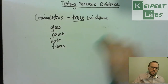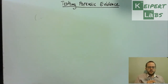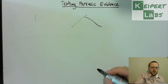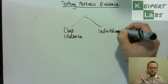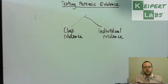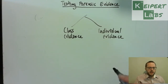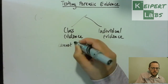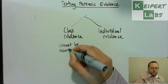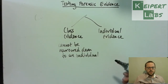When thinking about items of evidence in general, we can consider that evidence falls into one of two categories: what we call class evidence and what we call individual evidence. Depending on what type of item it is and based on how closely we can narrow down what left that mark, contact, or trace — class evidence cannot be narrowed down to an individual.